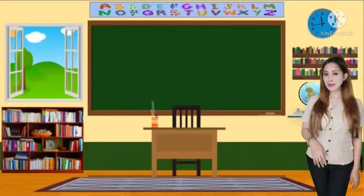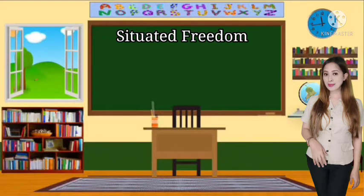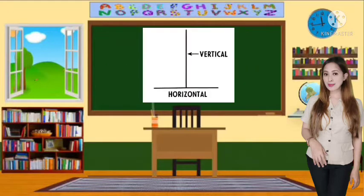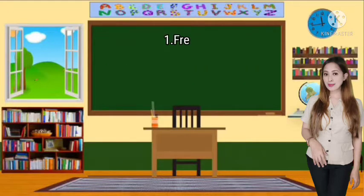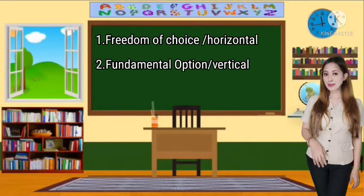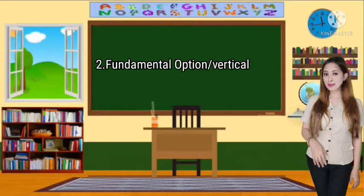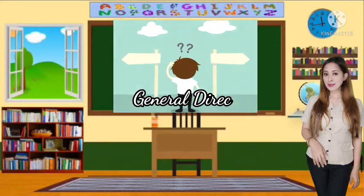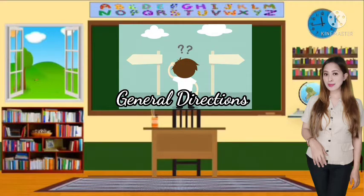From our previous discussion, we learned about situated freedom. Situated freedom means that our choices in life depend on a given situation. Based on this idea, two types of freedoms were derived. The first type is the freedom of choice, or horizontal freedom, and the other is the fundamental option, or vertical freedom. Freedom of choice is a basic and particular choice that we make every day in our lives.